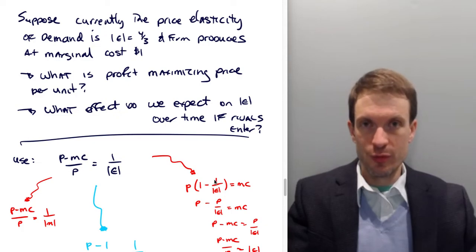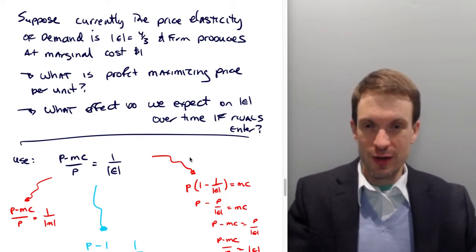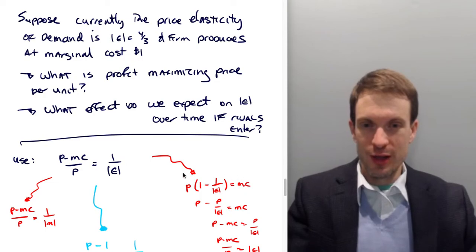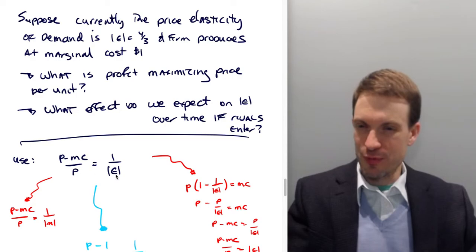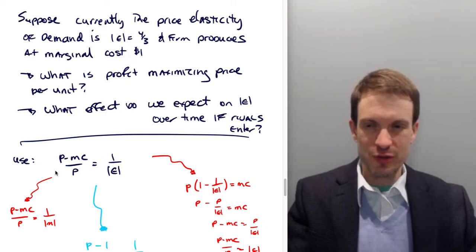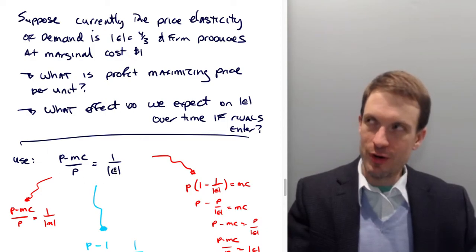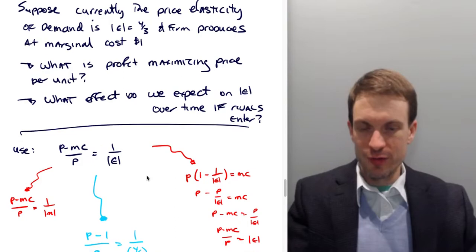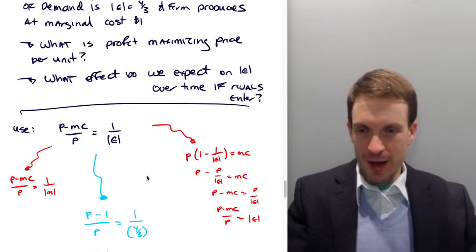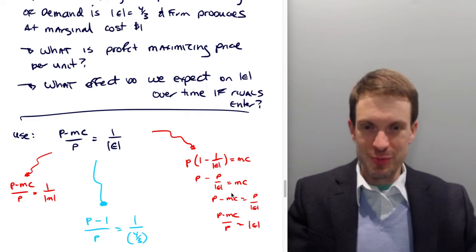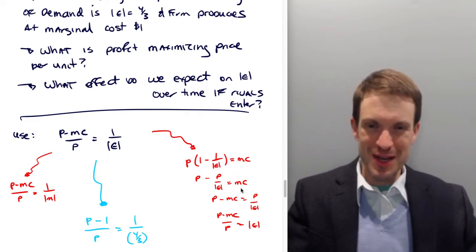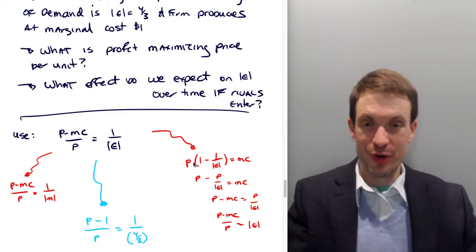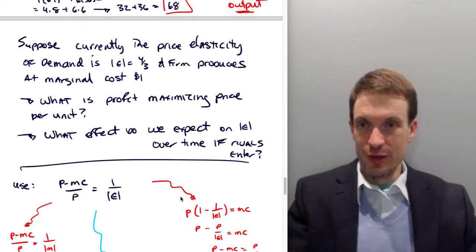If you begin from revenue and take the partial with respect to quantity, this more readily drops out. And if you take the partial with respect to price, this more readily drops out. Profits with respect to price, this more readily drops out. Anyway, assuming we got to this point, or assuming we got to this point and manipulated to get here, or maybe we just work from this version of it. Either way, let's drop in the information we have.